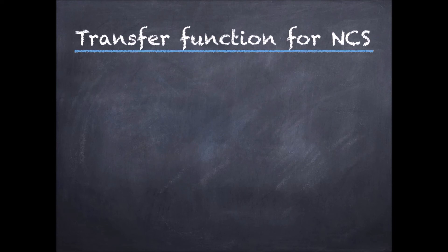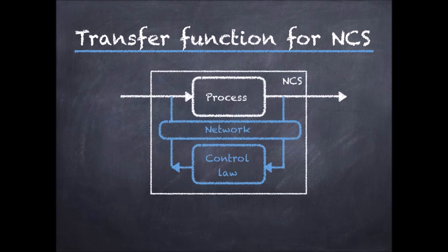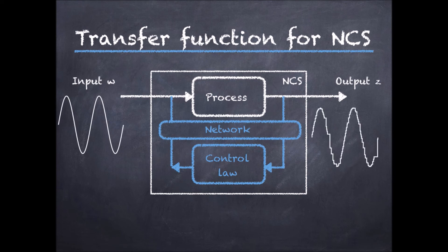The idea to define transfer functions is similar. Let us consider again our networked control system, and let us denote the input by w to distinguish it from the input u to the process. This input might be, for instance, a reference signal. Let us denote the output by z. We know that if we apply a deterministic input, the output is not going to be deterministic due to the stochastic delays and packet drops.